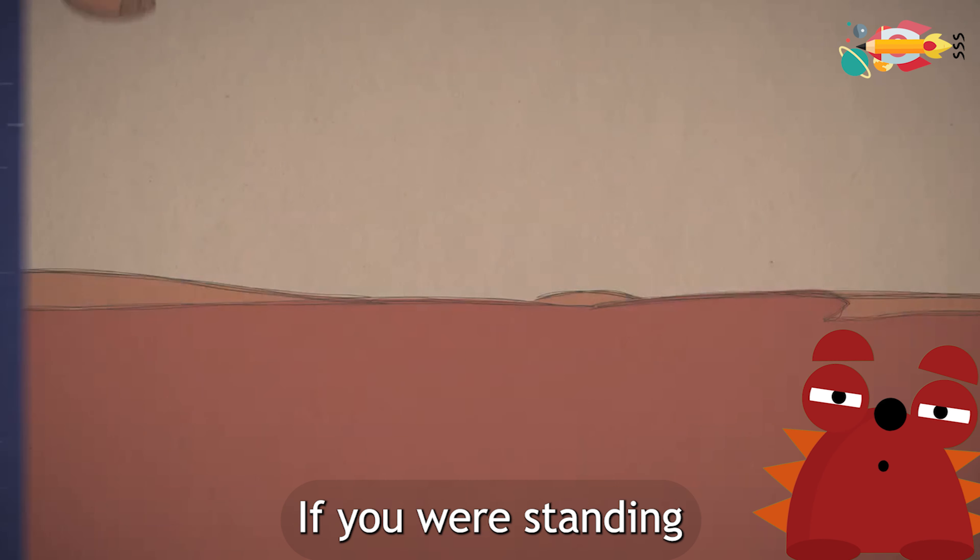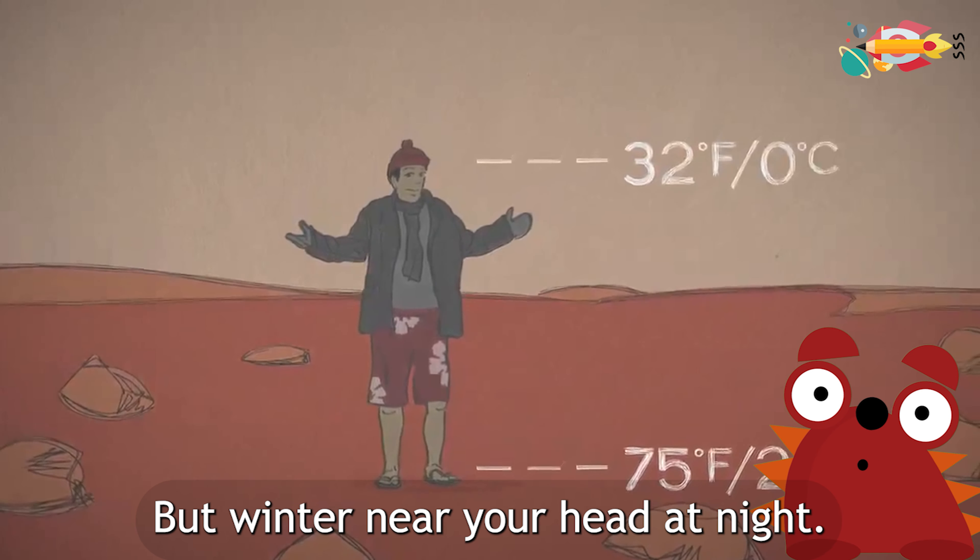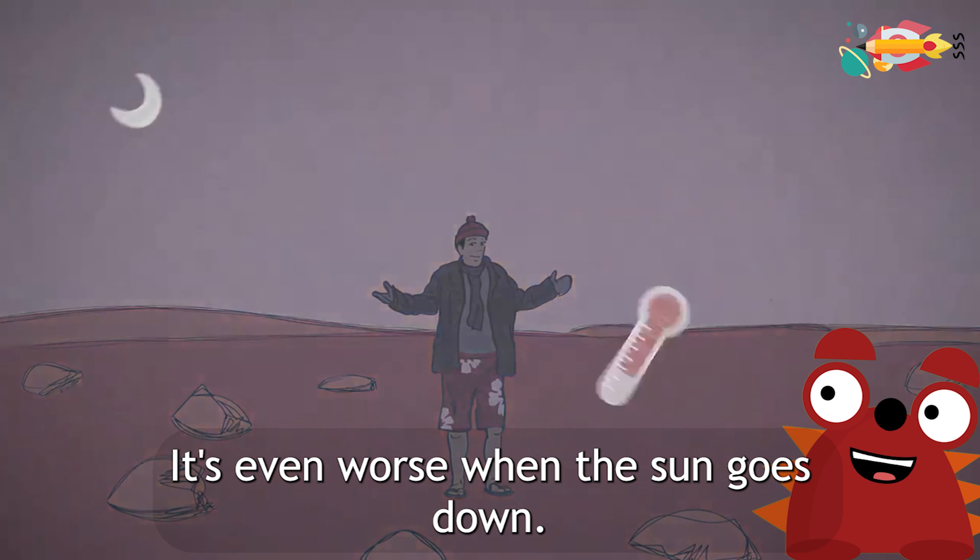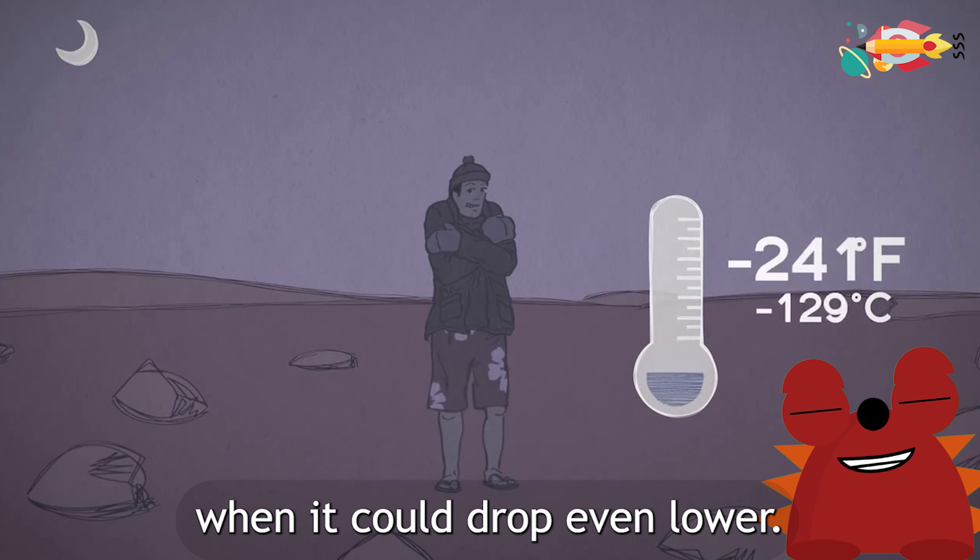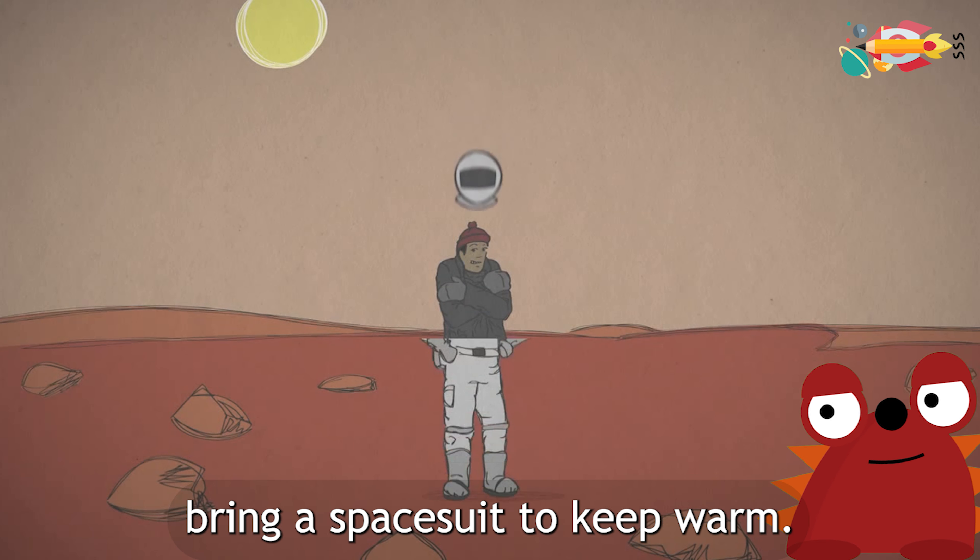How easily? If you were standing on the Martian equator at noon, it would feel like summer at your feet, but winter near your head. At night, it's even worse. When the Sun goes down, temperatures can plummet to negative triple digits. And beware of cold winter nights when it could drop even lower. So if you plan to visit, better bring a spacesuit to keep warm.